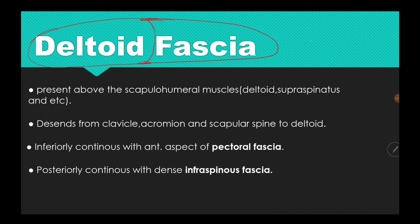The next fascia is the deltoid fascia. As the name indicates, the deltoid fascia is located above the deltoid muscle and the scapulohumeral muscles, including the deltoid, supraspinatus, infraspinatus, teres minor, teres major, and others. However, supraspinatus and infraspinatus also have their own supraspinous and infraspinous fascia.